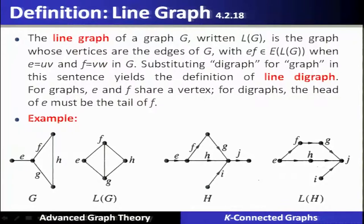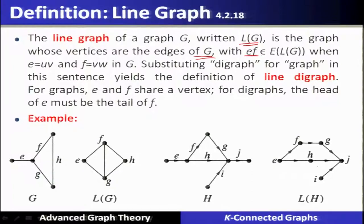We have seen the vertex version of Menger's theorem. Now to prove the edge version we need a special kind of graph called a line graph. A line graph of a graph G, denoted L(G), is a graph whose vertices are the edges of the original graph G. The edges of the line graph are E-F when E is an edge u-v and F is an edge v-w in the original graph — that is, two edges touching at v form an edge E-F in the line graph.